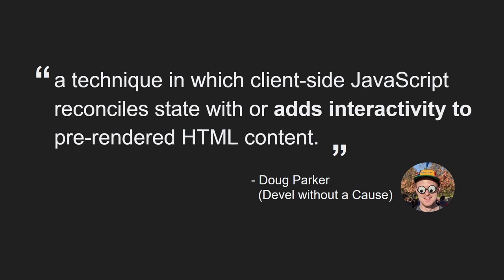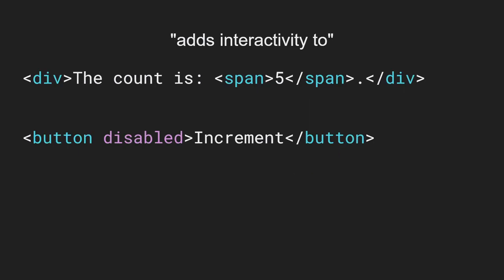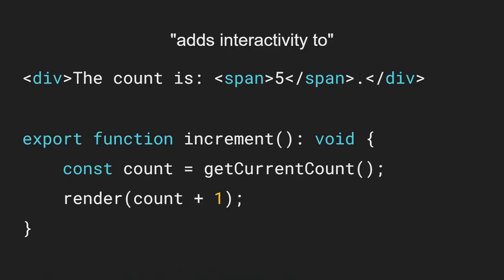Adds interactivity is my way of saying that hydration applies behavior to the pre-rendered HTML. This can be a one-off interaction like just enabling a button, but it can also mean binding an event listener such that when you click that button, it increments the count. Binding event listeners is probably the most common interaction pattern in hydration, but by no means the only one. For example, hydration might not do anything immediately, but instead expose some functionality for other JavaScript code to leverage — like exporting an increment function which will read/write the DOM lazily.